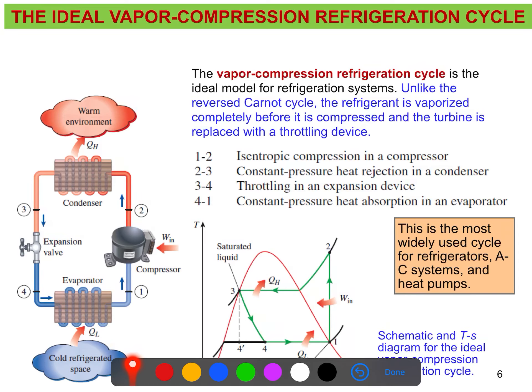If you closely look at this, the physical components and basic things are the same, but here we have an expansion valve. Previously when we discussed the reverse Carnot cycle, we had a turbine — here we simply replace the turbine with an expansion valve.